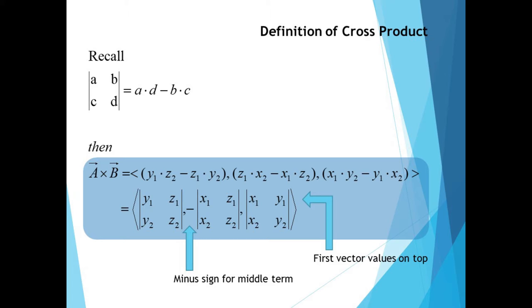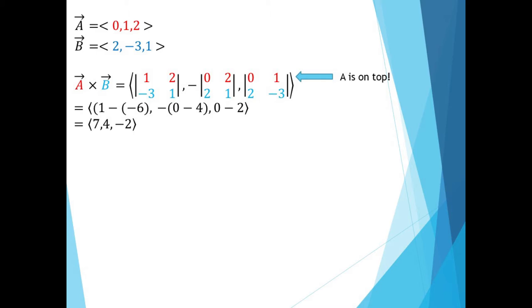Here's a couple of examples. We'll let a equal 0, 1, 2, and b equal 2, negative 3, 1. Then a cross b is the new vector where the first component is the 2x2 determinant ignoring both x values. The second component has a negative in front but skips the y values, and the third component skips the z values. This gives us the new vector 7, 4, negative 2.